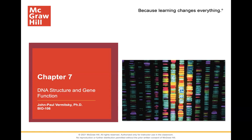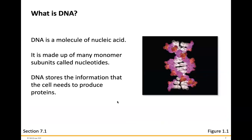Today we're going to talk about DNA structure and gene function. DNA is a molecule of nucleic acids. There are five different types of nucleic acids. DNA is essentially a polymer, which means you have a bunch of these nucleic acids linked up together. It is made up of many monomer subunits called nucleotides. DNA stores the information that the cell needs to produce proteins — it is your genetic information.